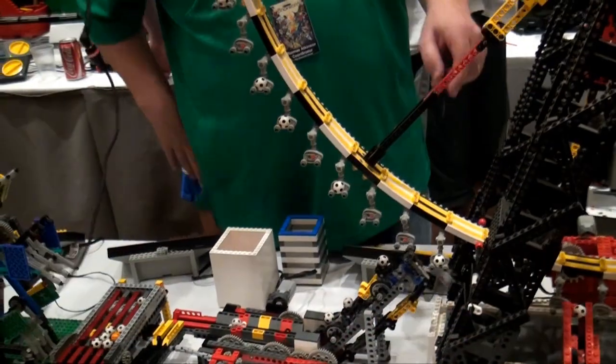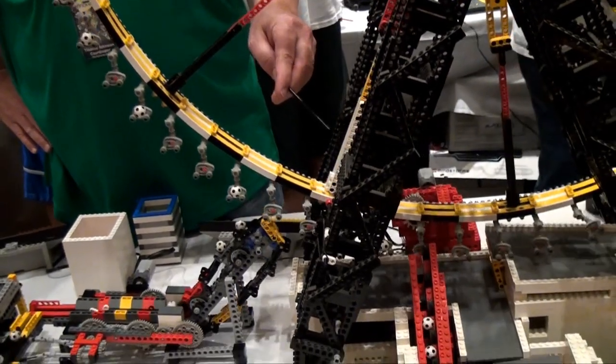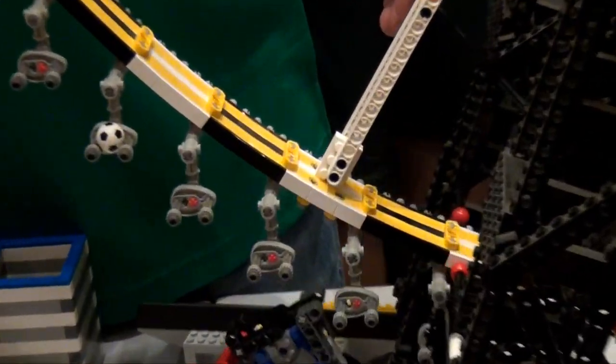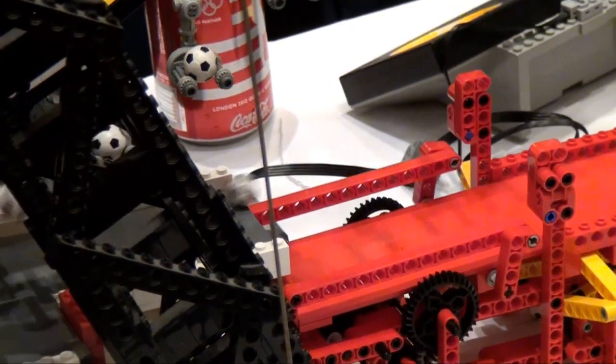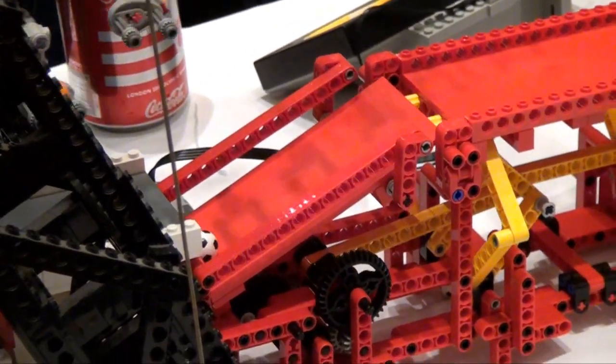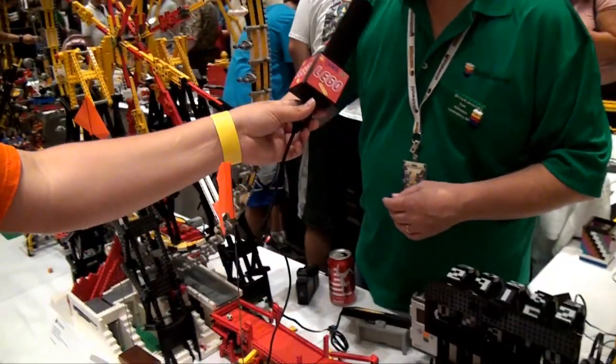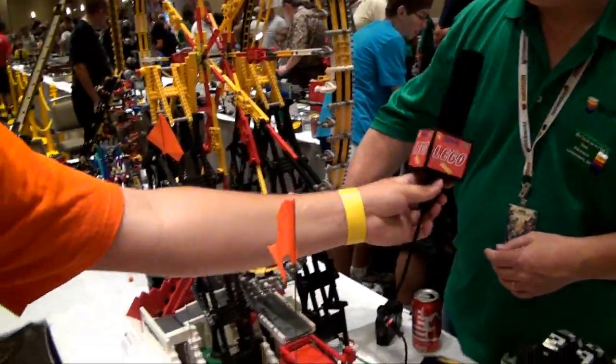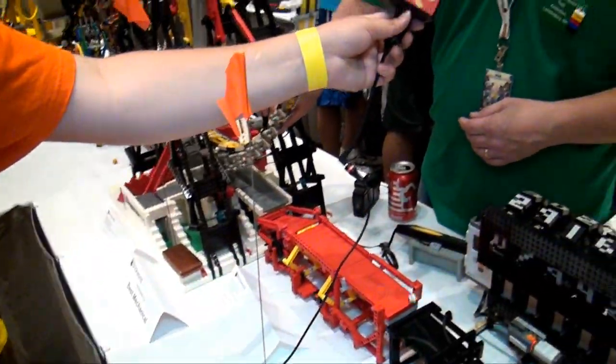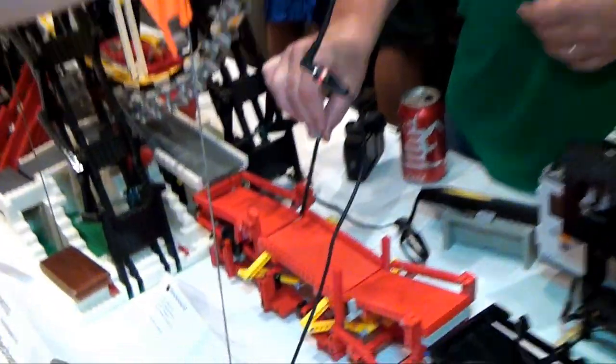At the ferris wheel they're dropped one at a time onto the carrier and the carrier brings it all the way around and this ferris wheel can hold up to 60 balls at once. And once they come all the way around hanging on the carrier, the balls get dropped off by this bar that tips it and drops the balls off and they roll out and onto the next module.